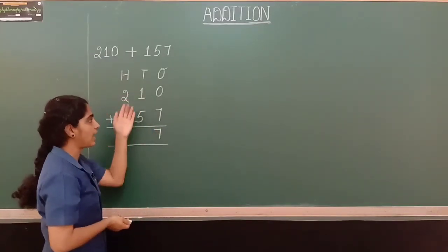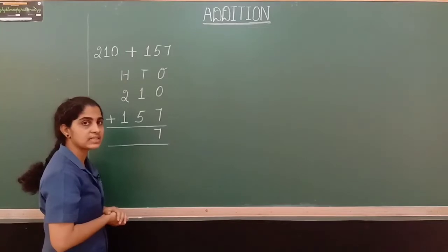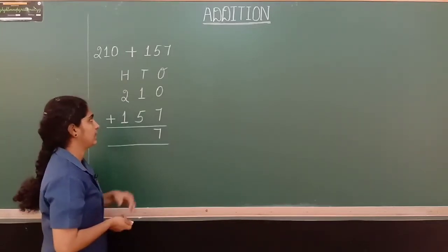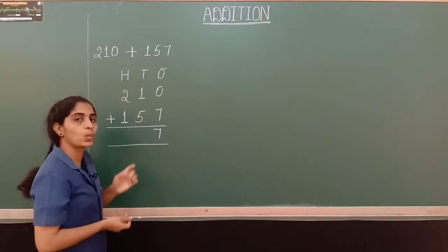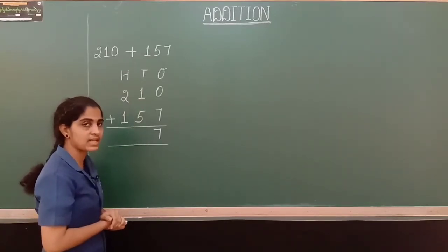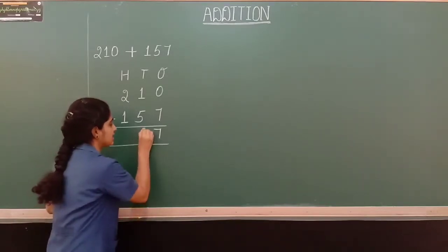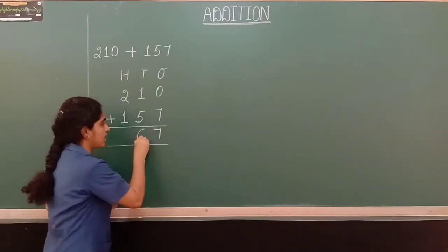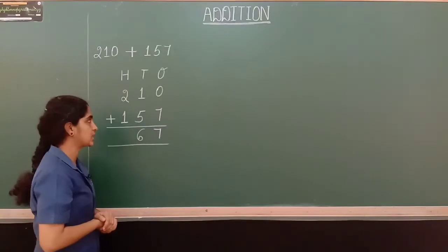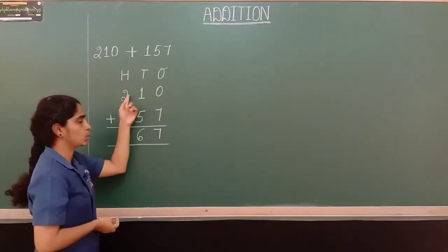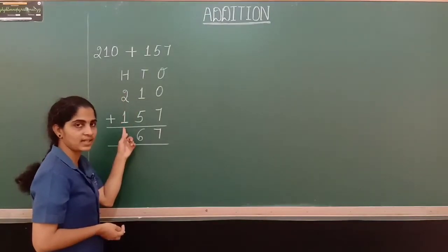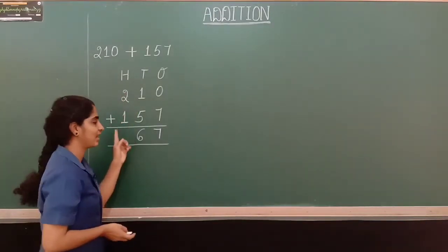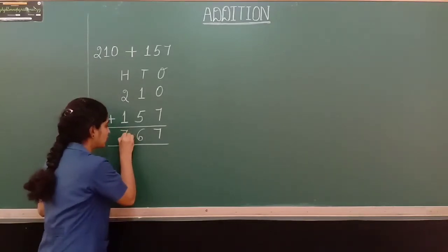Now we have to add the numbers in 10's place. In 10's place we have 1 and 5. So 1 plus 5 — the answer is 6. Now let us move to 100's place. Here we have 2 and 1. So 2 plus 1 — the answer is 3.